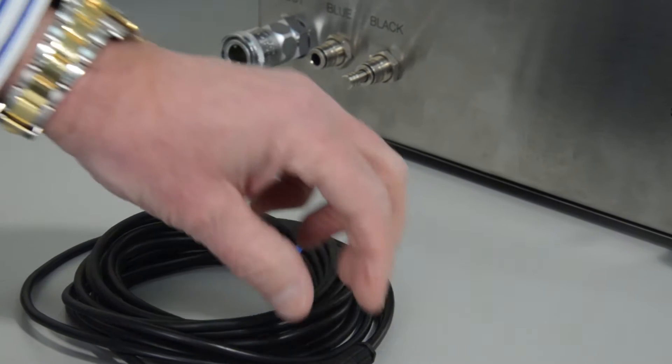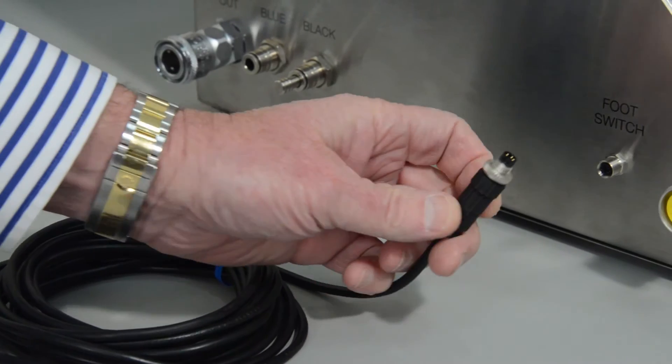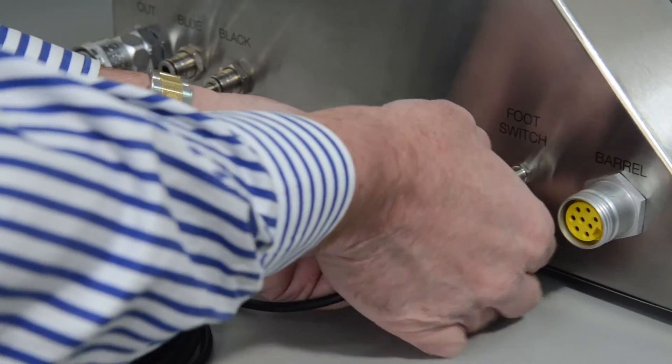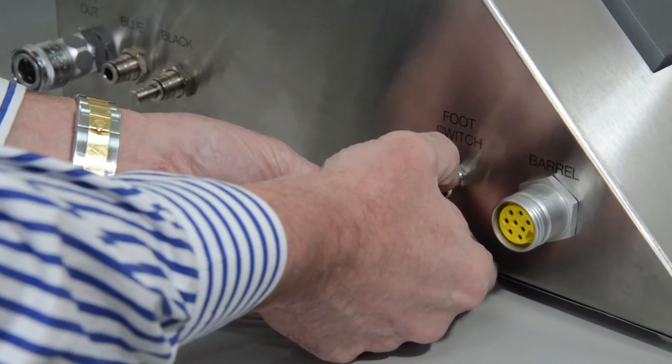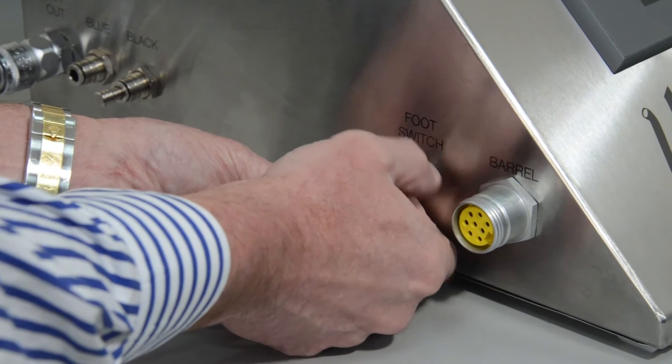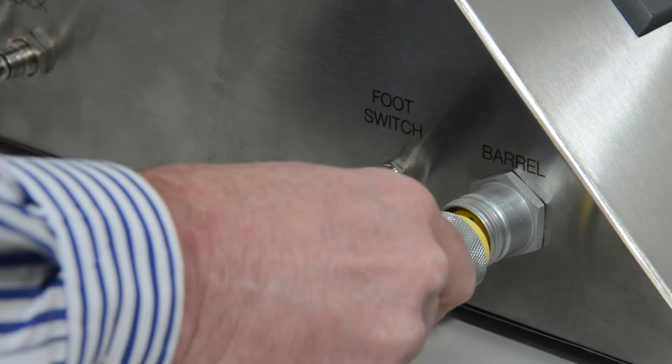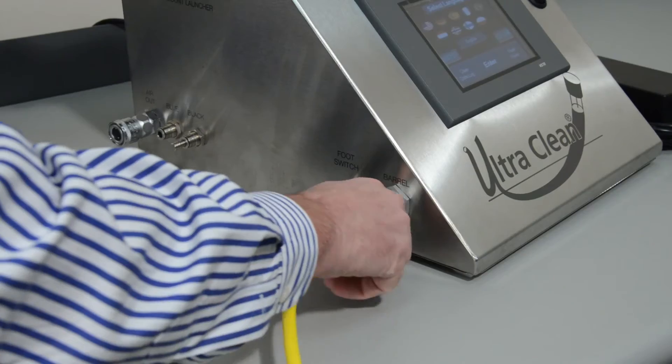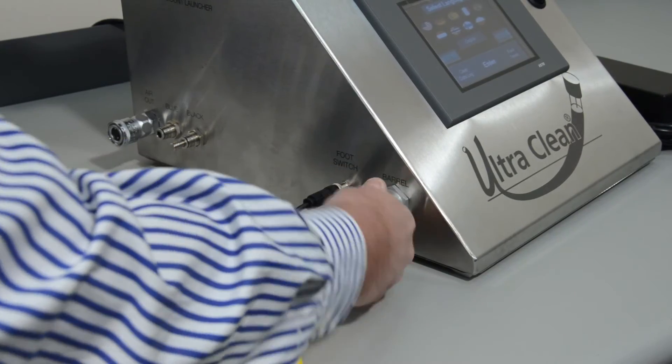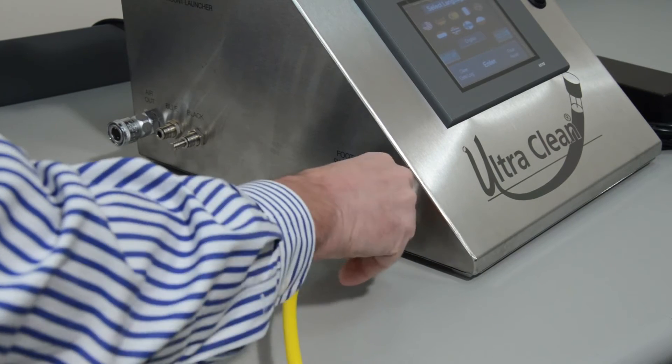Begin setting up the PVS-G3 by connecting the electric foot switch cable to the 4-pin socket on the left side of the control station. Then, connect the yellow cable from the containment barrel to the 8-pin socket on the left side of the control station by hand tightening the knurled nut.